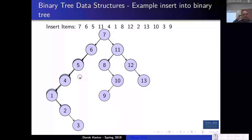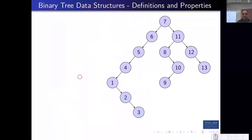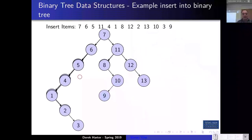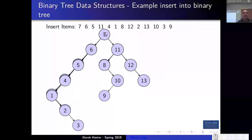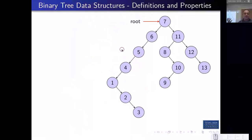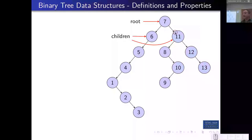A couple of properties of a binary tree: the top node is the root node. Typically, if we don't do anything special, the first node you insert is going to be the root node, and that governs the structure of your tree. All nodes less than it go to the left, and all nodes greater than it go to the right. In a binary tree, every node can have 0, 1, or 2 children. In this case, the root node 7 has 2 children — the left child has value 6, and the right child has value 11.